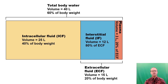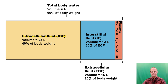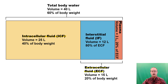This slide shows the distribution of water through different compartments in the body. There are two main compartments: the intracellular compartment, filled with intracellular fluid, and the extracellular compartment. The intracellular fluid comprises the majority of body water — about 25 liters, about 6 gallons, or 40% of body weight. The extracellular fluid is about 15 liters, or 20% of body weight.